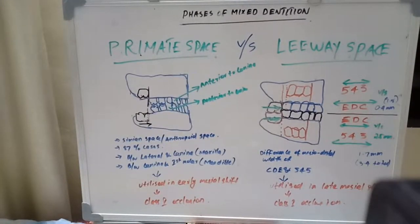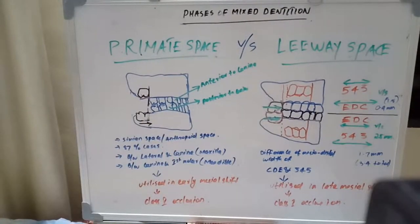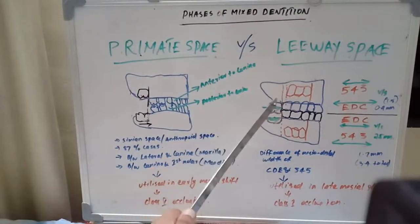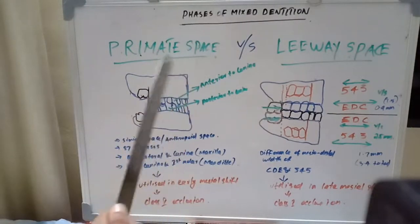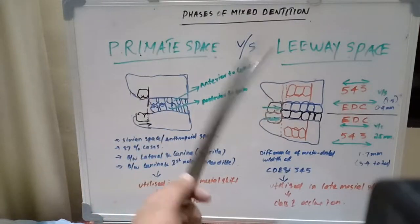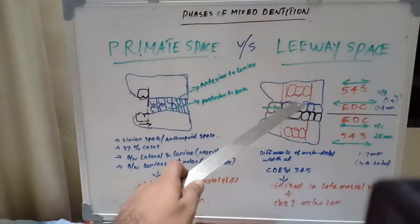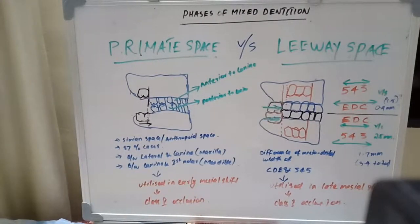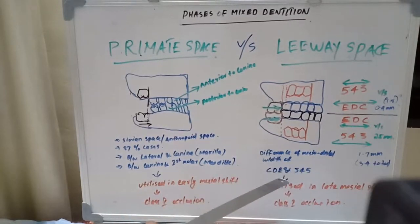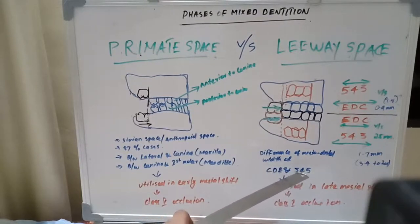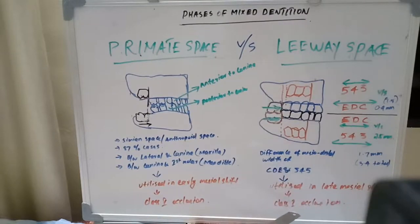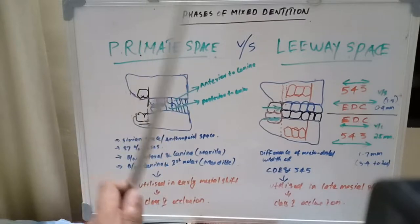The mesiodistal width is definitely larger in the deciduous dentition, and this leeway space is utilized by the permanent molars where primate spaces are absent. This happens when the deciduous molars are exfoliated — a concept we will see in the mesial shift discussion. Leeway space is utilized in late mesial shift to reach Class I occlusion when primate space is absent.